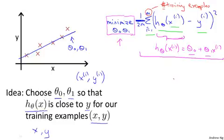So just to recap, we're posing this problem as, find me the values of theta 0 and theta 1 so that the average, or really, 1 over 2m times the sum of squared errors between my predictions on the training set minus the actual values of the houses on the training set is minimized. So this is going to be my overall objective function for linear regression.